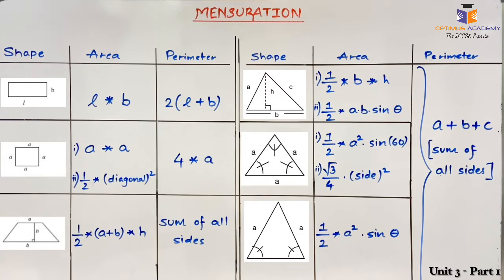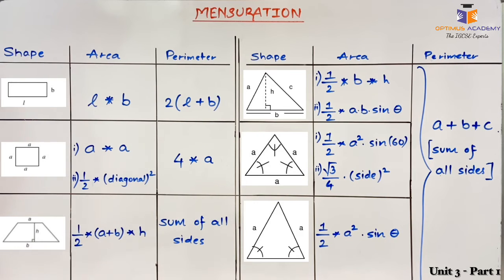The next shape is trapezium. A trapezium has two parallel sides, denoted by A and B. The area of a trapezium is: half × (A + B) × height, where height stands for the perpendicular height between the two parallel sides. The perimeter of a trapezium is the sum of all sides.